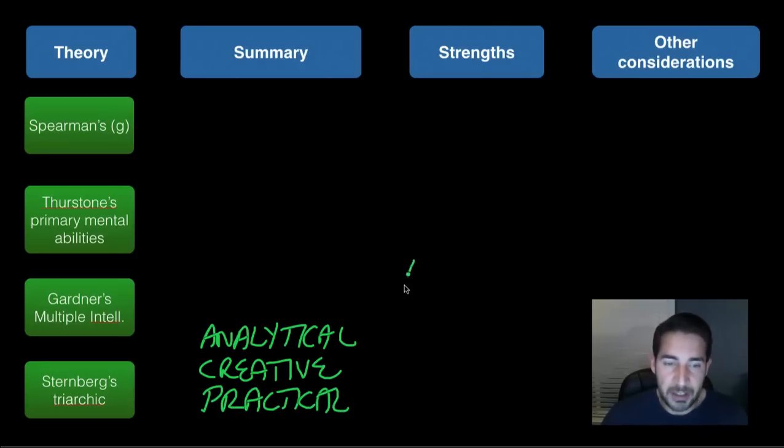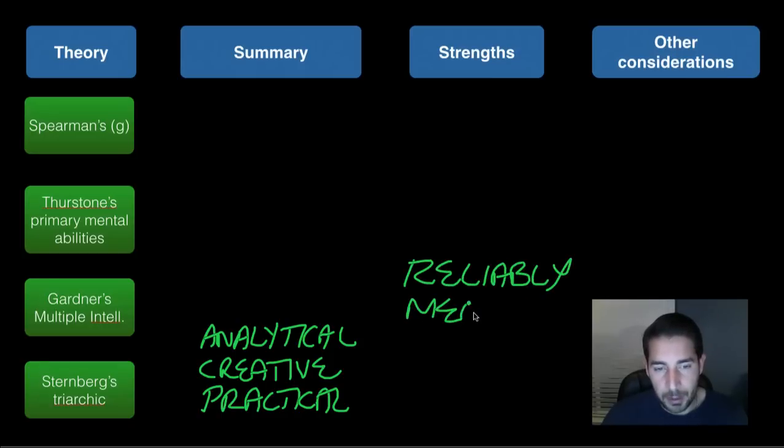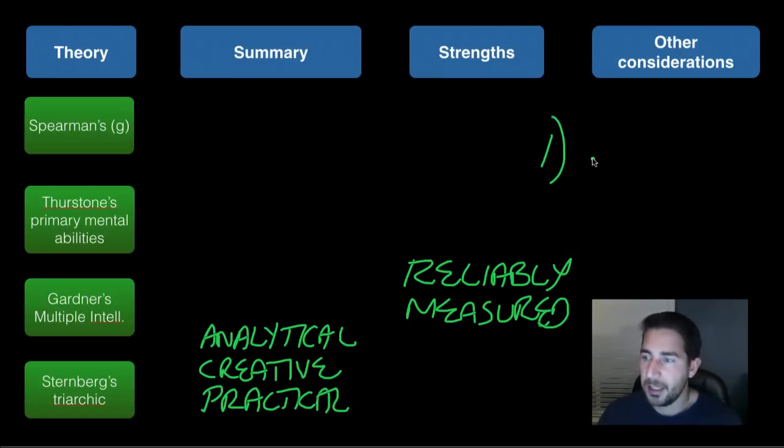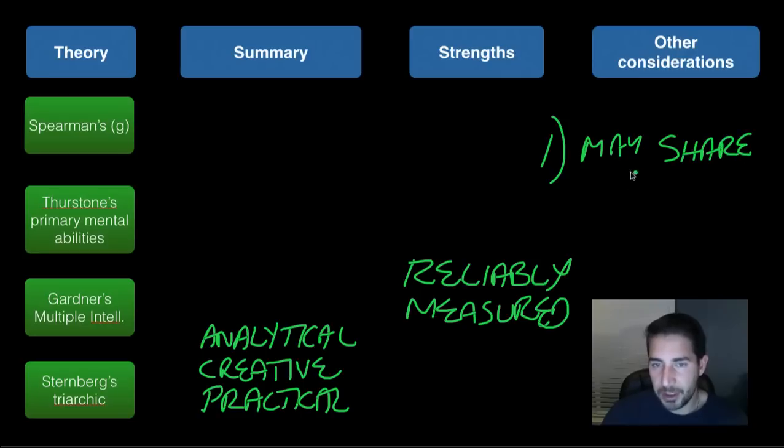And the strength is that can be reliably measured. Reliably measured. Other considerations, maybe there's two that we should look at here. One, they may be less independent than Sternberg thought. They actually share an underlying G factor. So they may be less independent, but they may share that G factor again. So just like Thurston's, his triarchic, if you're creative, you might be more practical and analytical, and tends to correlate with each other.